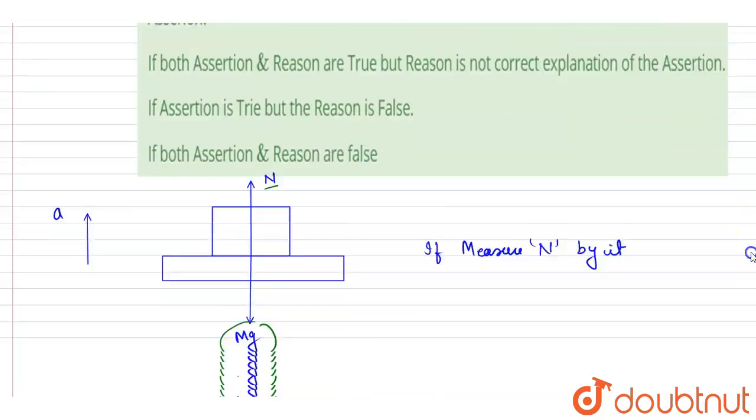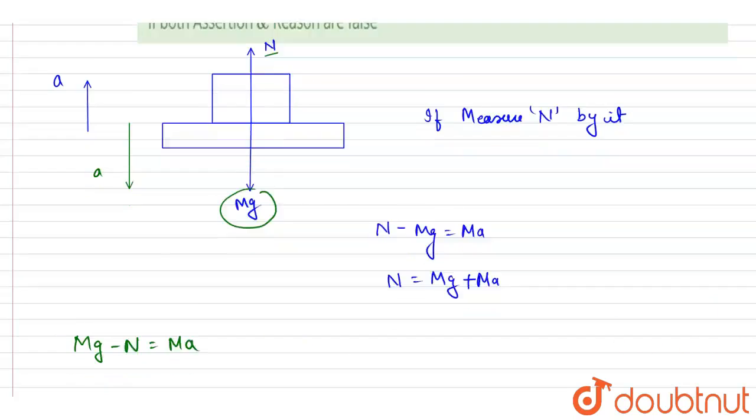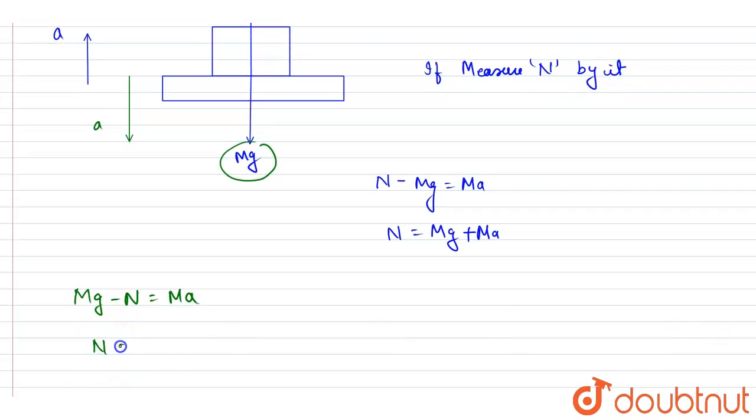How can it be zero? Let's take an example where it is moving in downward direction with acceleration a. I will write mg minus N equals ma, so from here I can write the normal reaction is equal to mg minus ma.